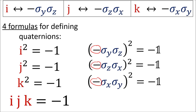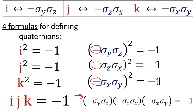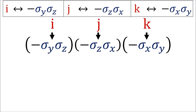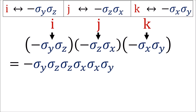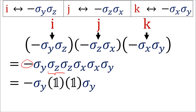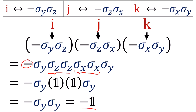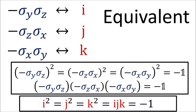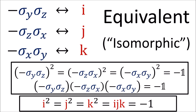Next, we need to show the equivalent of i times j times k equals negative 1. If we replace i, j, k with our negative sigma pairs, we can multiply all three negative signs into a single negative sign out in front. The inner pairs of sigma z's and sigma x's go to 1, and the remaining pair of sigma y's also goes to 1. So we get negative 1 as desired. So these negative sigma pairs are completely mathematically equivalent to the quaternion imaginary units — in mathematical terms, we say they are isomorphic.